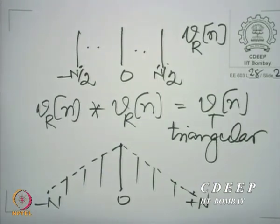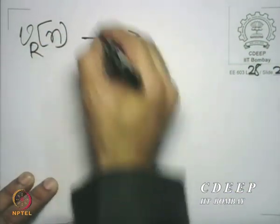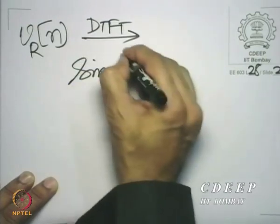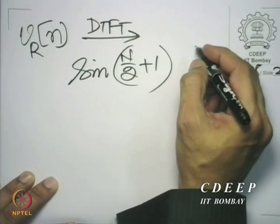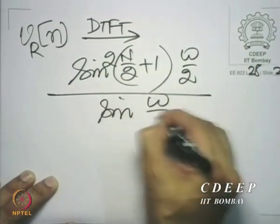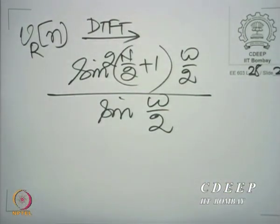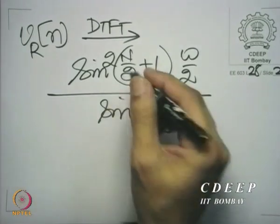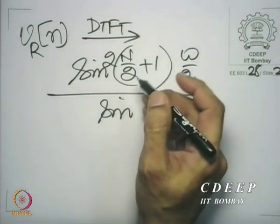Here we assume that N is even to make matters simple. You could always conceive of a triangular window even if N is odd, but here we will make matters simple to understand how the discrete time Fourier transform looks. When you convolve two sequences, the discrete time Fourier transforms are multiplied. We know what the DTFT of v_r(n) is — we calculated it last time. It is sin((N/2 + 1)ω/2) divided by sin(ω/2), where N has been replaced by N/2.